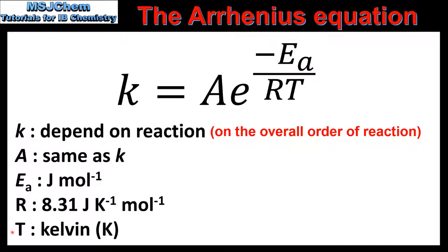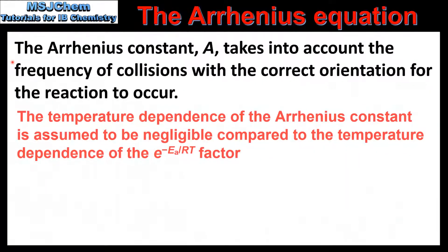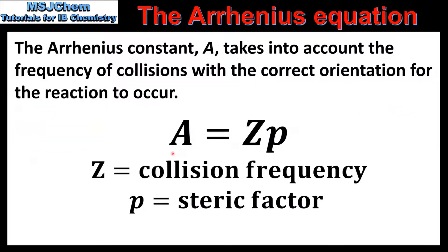The unit for temperature is Kelvin. The Arrhenius constant takes into account the frequency of collisions with the correct orientation for the reaction to occur. The Arrhenius constant is Z multiplied by P, where Z is the collision frequency and P is the steric factor. The steric factor can be thought of as a ratio of the collisions with the correct orientation to all possible collisions.